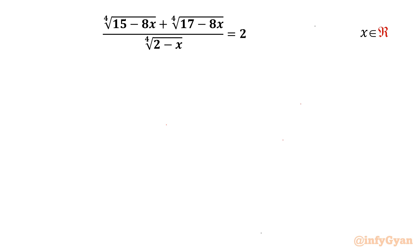Welcome back to Infigyan, my dear friends. Today in this video we are going to take up one very interesting radical equation question. It is: 4th root of (15 minus 8x) plus 4th root of (17 minus 8x), all over 4th root of (2 minus x), equal to 2. x belongs to real numbers. Let us get started by writing the domain of the equation first.